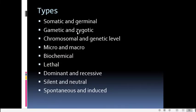Gametic mutations occur in the gametes during gametogenesis and lead to mutant characteristics in all gametes. Zygotic mutations occur in the zygote — during the first division or subsequent divisions — and from the point of mutation, all cells derived from that particular cell carry the mutation. When the organism is born as a multicellular organism, it will be a mosaic organism having both normal and mutant cells.